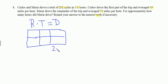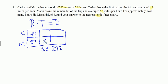Let's organize information in a table: rate times time equals distance. Total distance was 292 miles, total time was 5.8 hours. Carlos went 49 miles per hour, Maria went 52 miles per hour. We don't know how many hours Maria drove — let's call that x. Carlos drove the rest: 5.8 minus x hours. Rate times time gives Maria's distance as 52x, and Carlos' distance as 49 times (5.8 minus x).